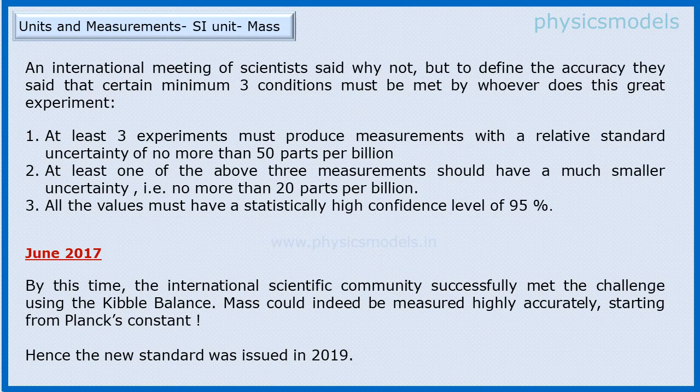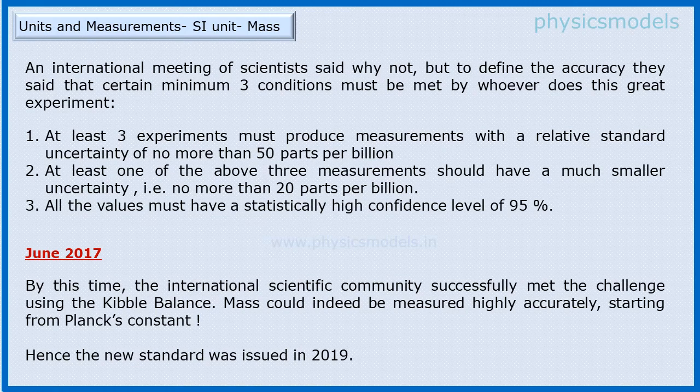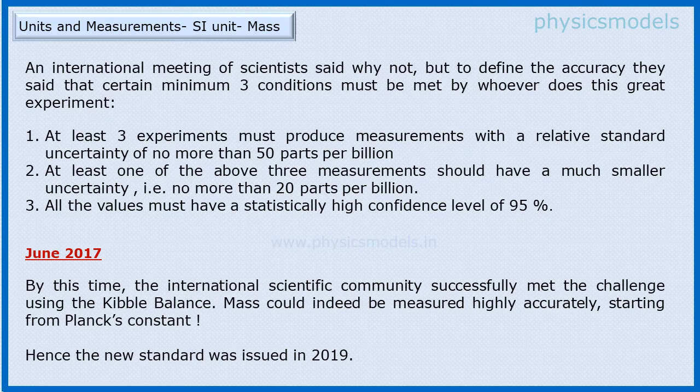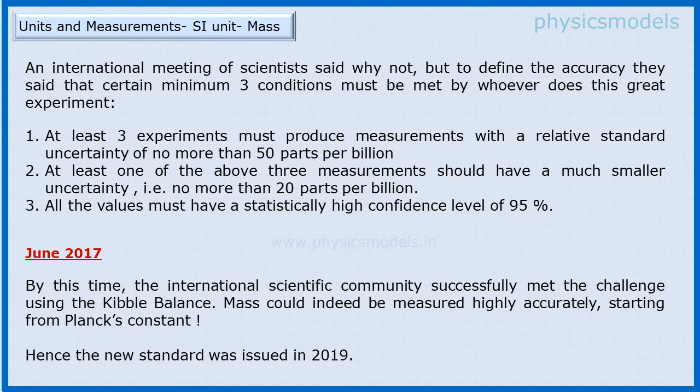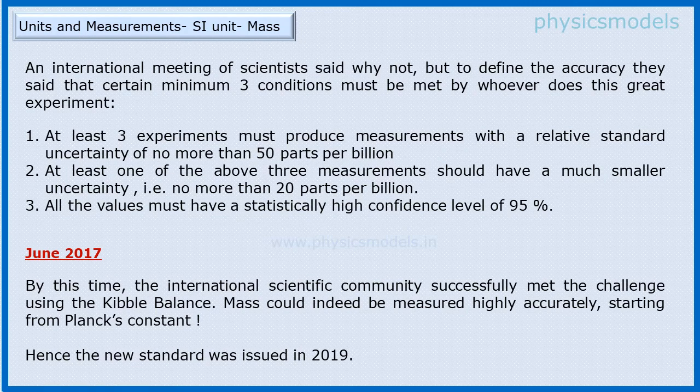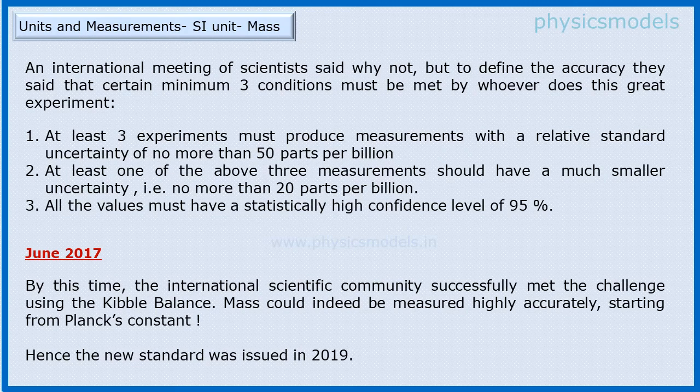The next step was scientists agreed that yes, it looks feasible to arrive at that magical one kg of mass starting from Planck's constant using a Kibble balance. However, three conditions must be met: First, three readings must give an error of less than 50 parts per billion. Second, one of these three readings should have an error of less than 20 parts per billion. Third, every reading should have a high confidence level of greater than 95%. It took till mid-2017 for scientists to meet this condition using the Kibble balance. They could measure mass very accurately starting from Planck's constant. With this confidence, the scientific community issued the new standard in 2019.